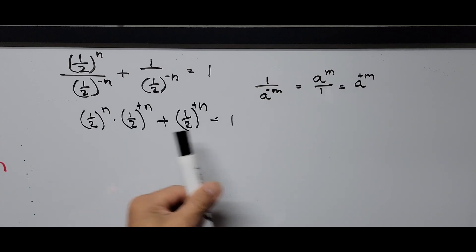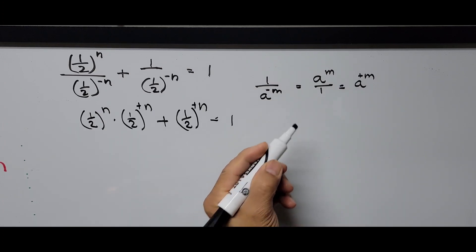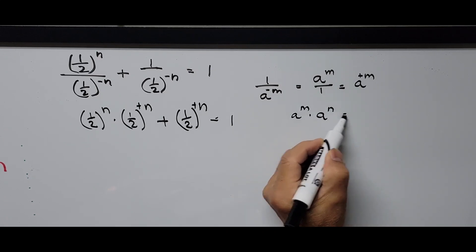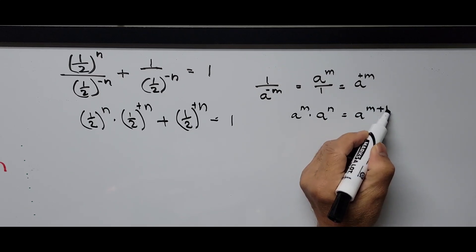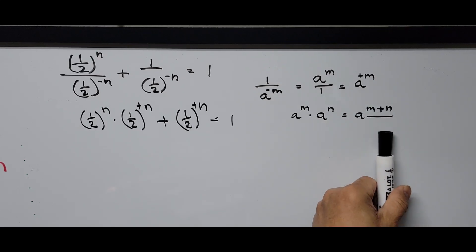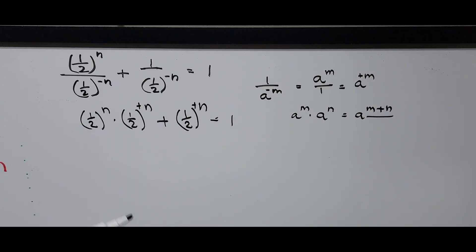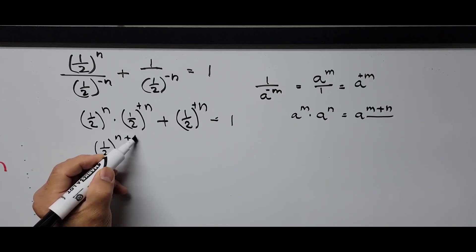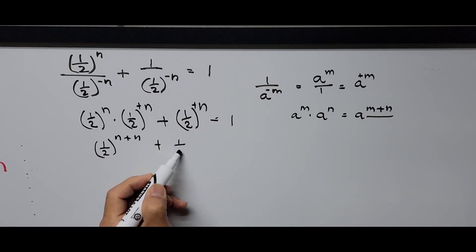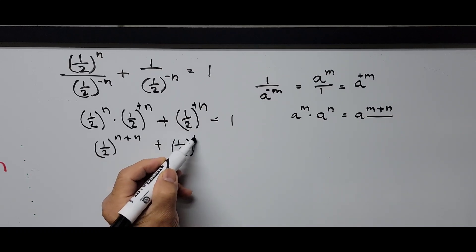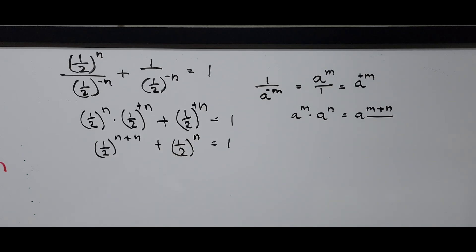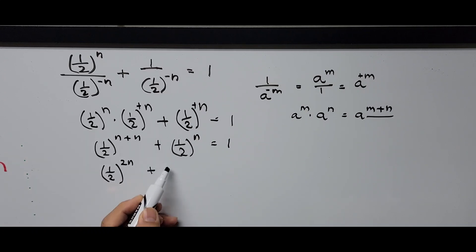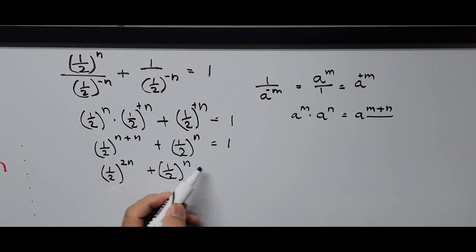Since both factors have the same base, we add exponents using the rule a^m × a^n = a^(m+n). So the first term becomes (1/2)^(n+n) = (1/2)^(2n), plus (1/2)^n equals 1.